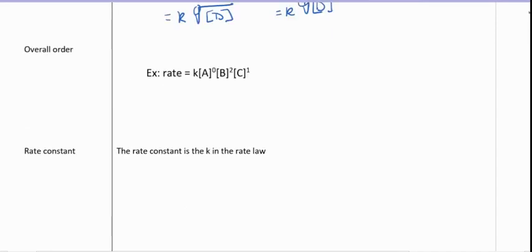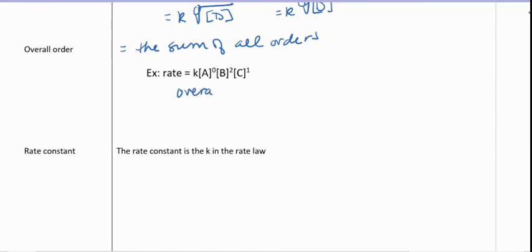Sometimes we want to talk about the overall order of the reaction. This is equal to the sum of all the individual orders. For example, if the orders are zero, two, and one, the overall order would be zero plus two plus one equals three. So this would be a third order reaction overall.